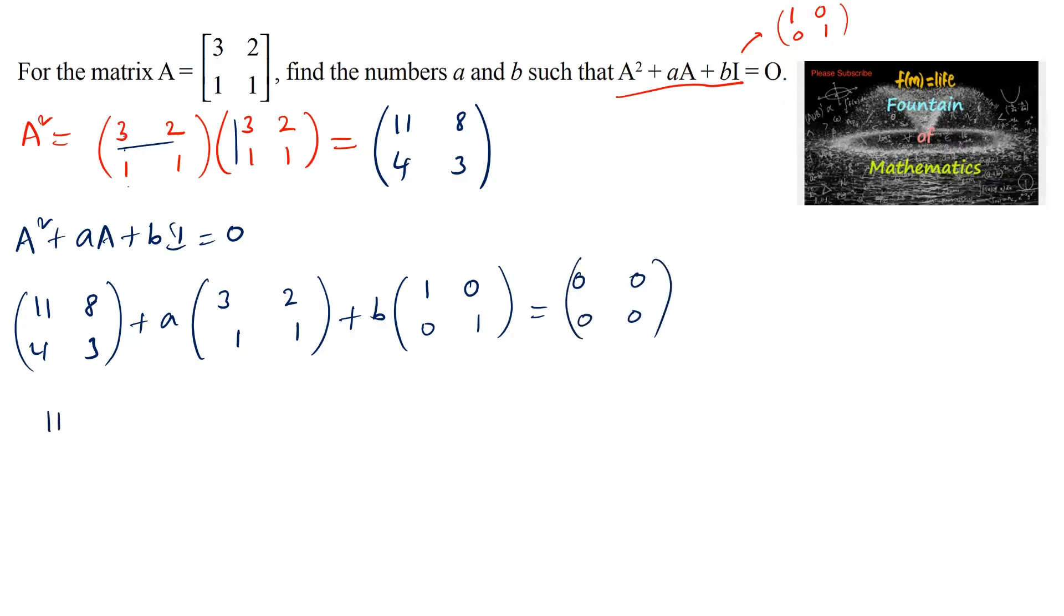Expanding: [11, 8; 4, 3] plus [3a, 2a; a, a] plus [b, 0; 0, b] equals [0, 0; 0, 0].